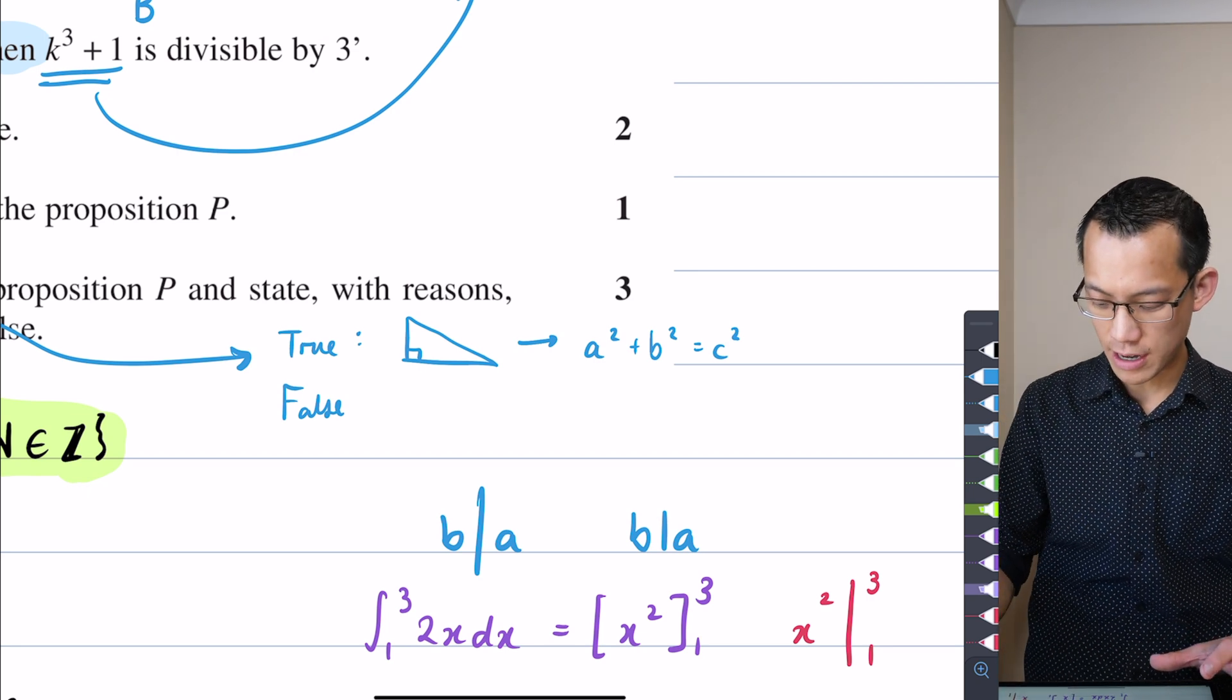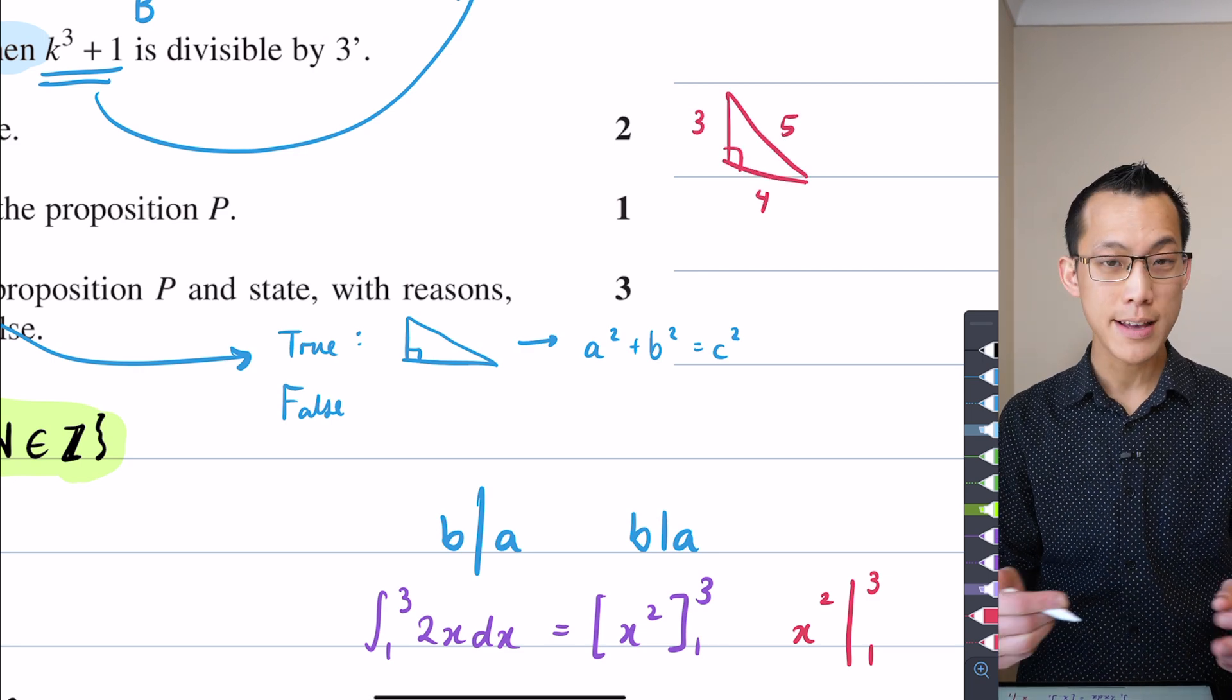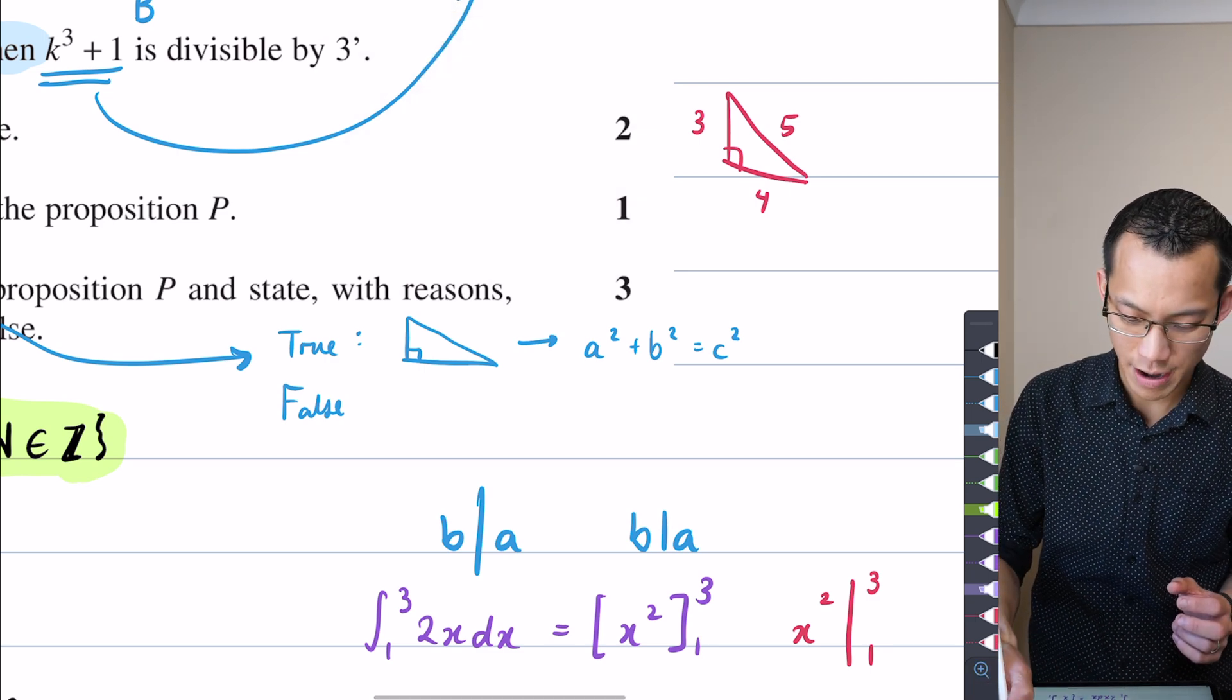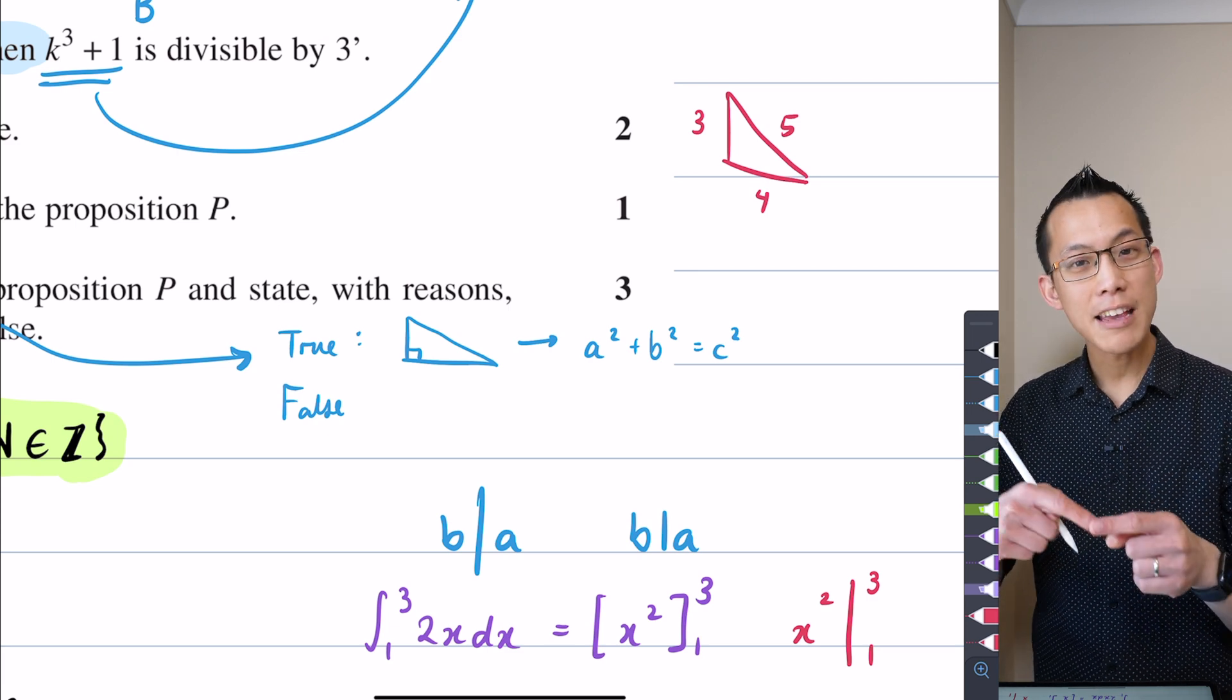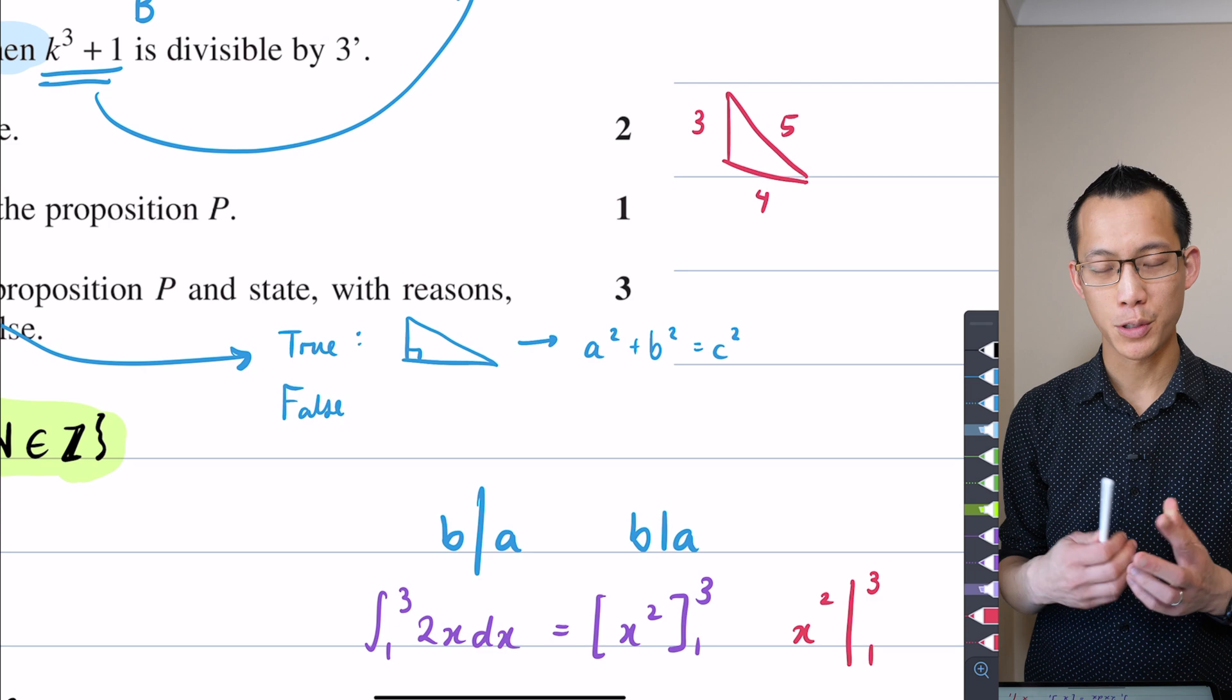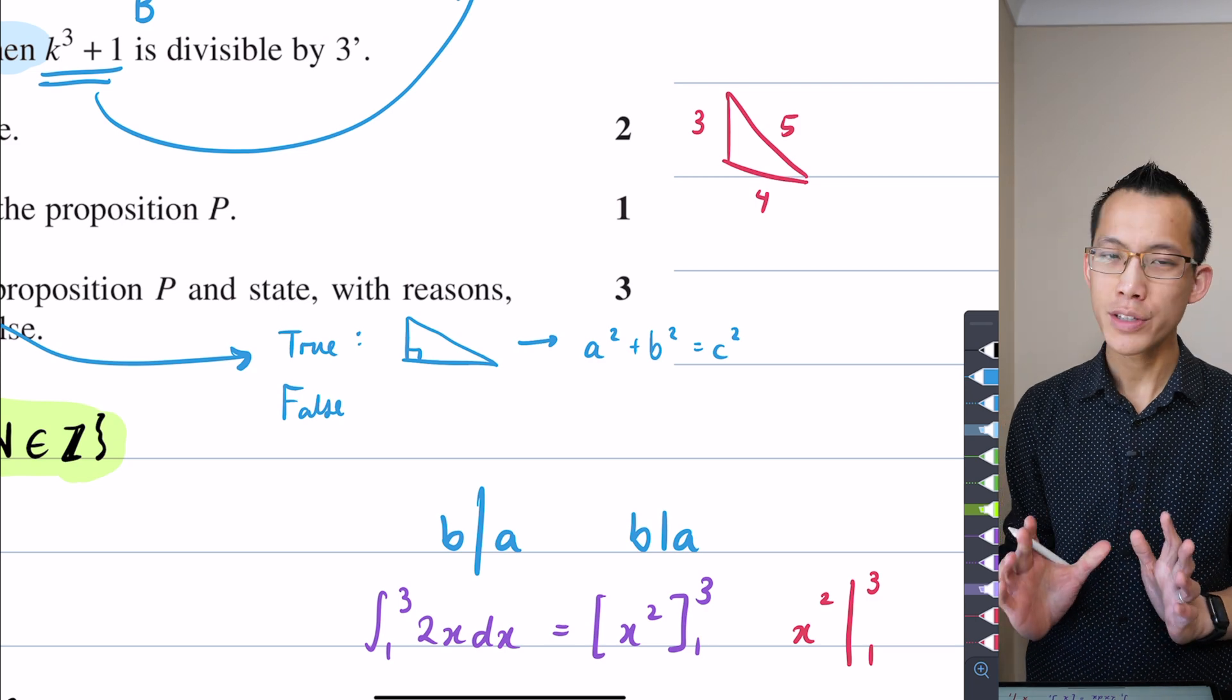But importantly, the converse of Pythagoras's theorem is also true. If you get handed some random triangle and you look at its sides and you can say 'oh, 3, 4, and 5, it looks like a²+b²=c²', if you know that those sides have this relationship, that implies back in the opposite direction that this is a right angled triangle.